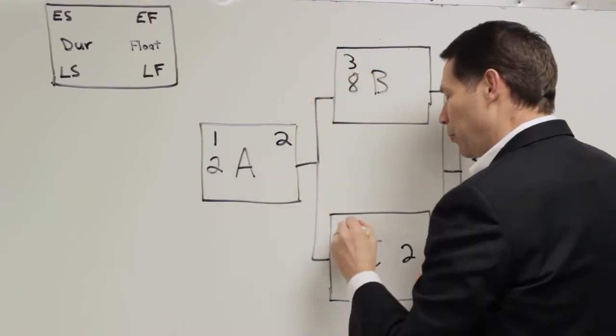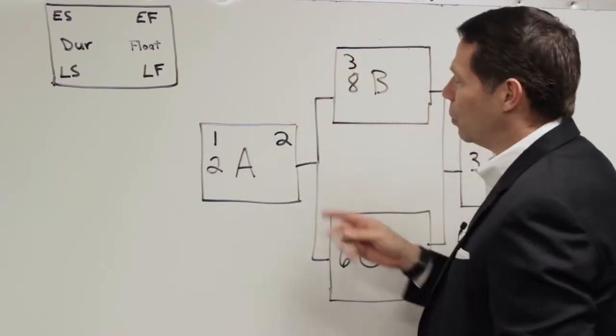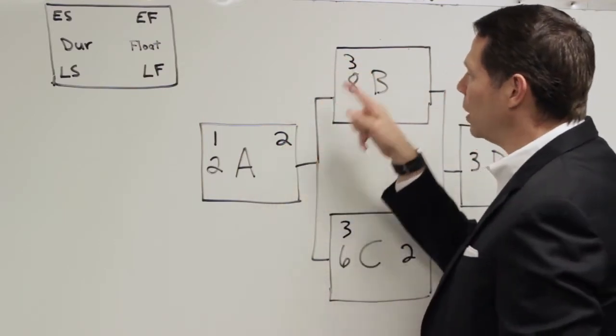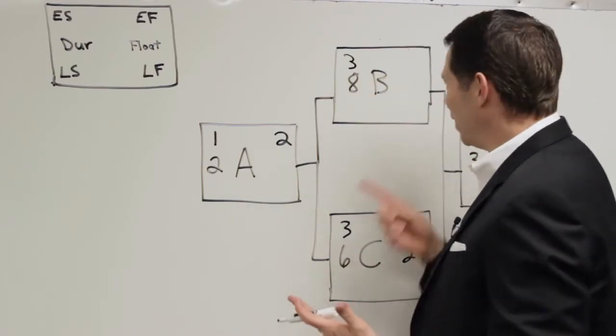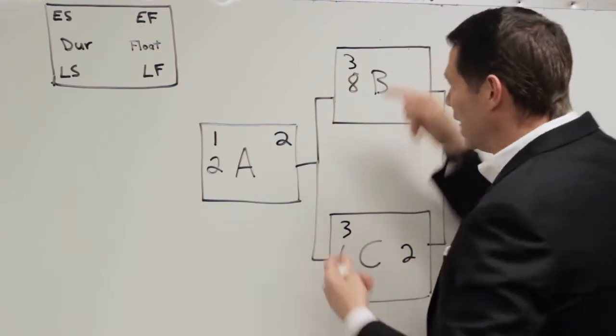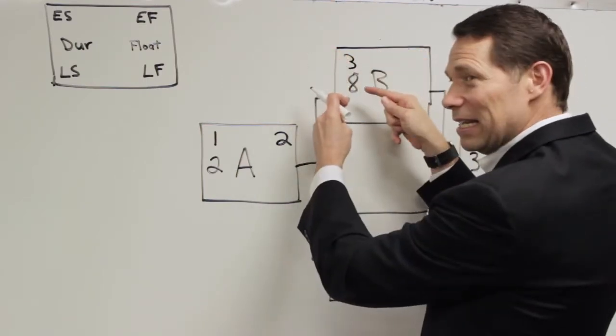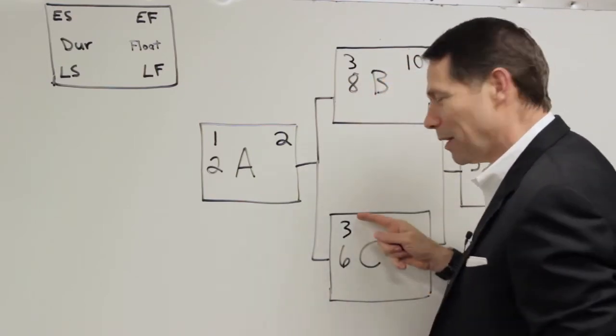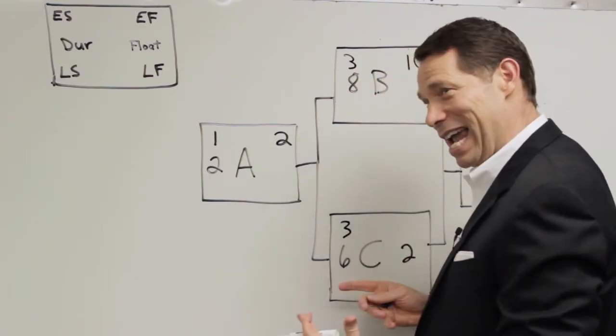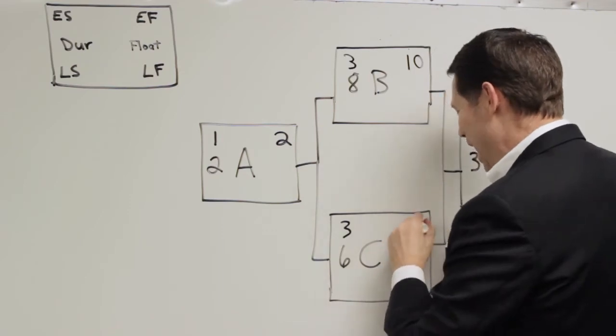I'm going to take the two. I'm going to add one to it. So I've got three and three. I've got my early finish there. I add one to it. My early start up here is three. How do you calculate the early finish for these guys? Same thing. Take this plus that. That'd be 11 minus one. So I've got 10 down here. Three plus six. That's my nine subtract one. I've got eight.